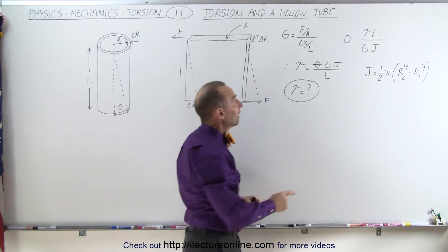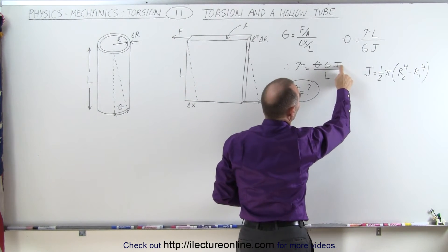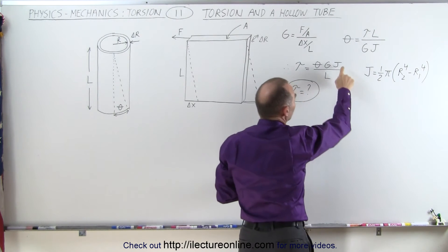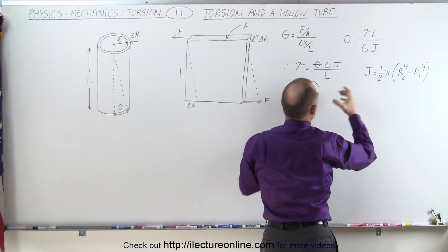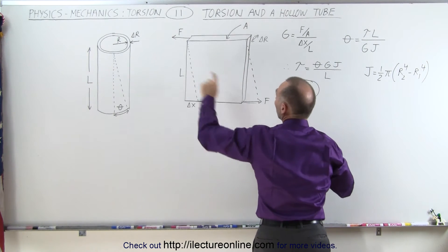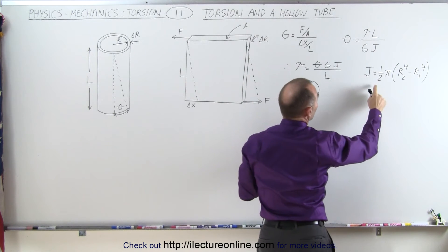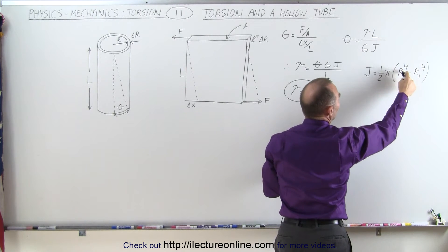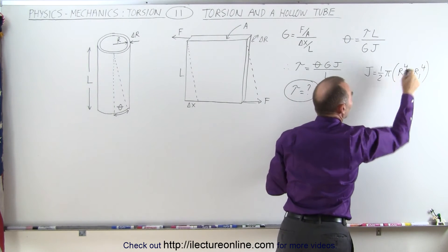The only thing left to do is to find the torsional constant j, which depends on the shape. And we know that the torsional constant can be found, since it's a circle with a hollow portion there, it's equal to one-half π times the outside radius to the fourth power minus the inside radius to the fourth power.